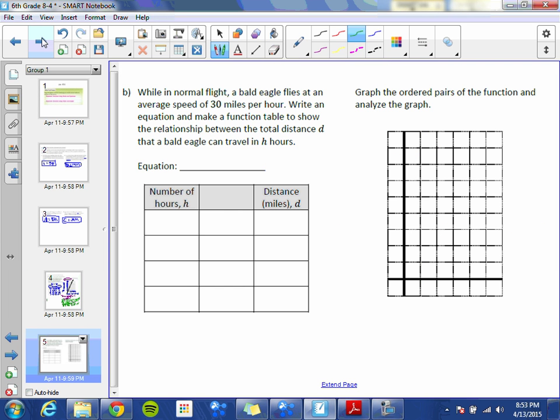Let's take a look at B. For a normal flight, a bald eagle flies at an average speed of 30 miles per hour. Write an equation and make a function table to show the relationship between the total distance d that a bald eagle can travel in h hours. So total distance d equals 30 times the amount of hours. So that's the equation that goes in our box here. It doesn't give us a set amount, so we're going to plug in 0, 1, 2, and 3.